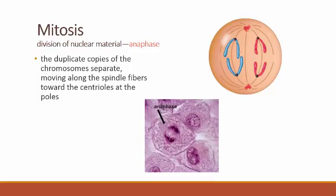The next stage is called anaphase. You can tell that anaphase is happening because the sister chromatids form these arrow shapes pointing away from each other — it looks a little bit like geese flying, half flying to the North Pole, half to the South Pole. This drags apart the sister chromatids so that the resulting daughter cells will have a full complement of chromosomes. By the end of anaphase, the sister chromatids are fully separated and clustered near the centrosomes at the opposite poles of the cell.